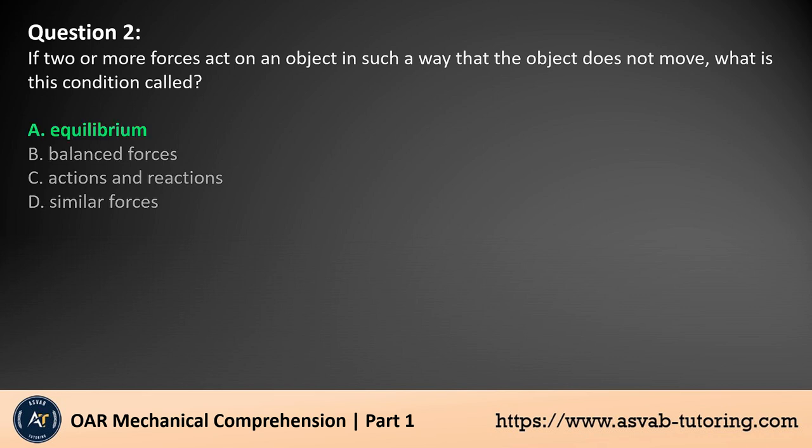The answer is A. When two or more forces act on an object and the object does not move, it is in a state of equilibrium. This occurs when the forces are balanced, meaning the net force acting on the object is zero. In equilibrium, all the forces cancel each other out, resulting in no acceleration or change in the object's motion.